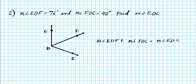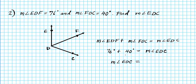We carry out the substitution: the measure of angle EDF is 76 degrees, the measure of angle FDC is 40 degrees, and that equals the measure of angle EDC. We don't have to do any solving here since the unknown is already isolated. The measure of angle EDC is simply the sum of these two angles — 76 plus 40 — which is 116 degrees. There goes our final answer for question number two.